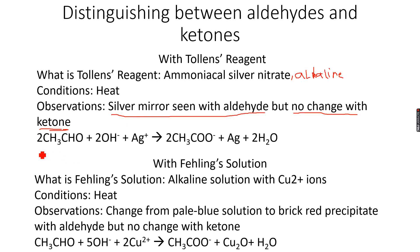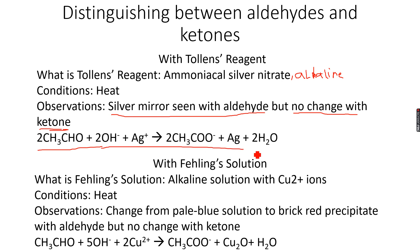This is because the aldehyde can be oxidized further to the carboxylic acid - or rather to the carboxylate ion, because it's an alkaline solution. The carboxylic acid donates its H+ ion to the alkali, giving the carboxylate ion. In the case of a ketone, there is no oxidation, so there is no reaction with Tollens reagent. The observation of a silver mirror occurs because the Ag+ ions are reduced to silver metal.